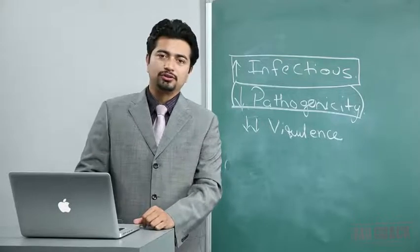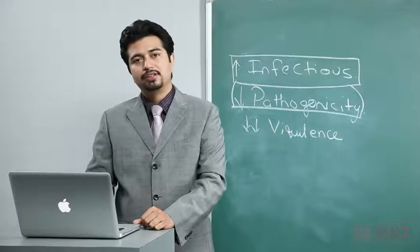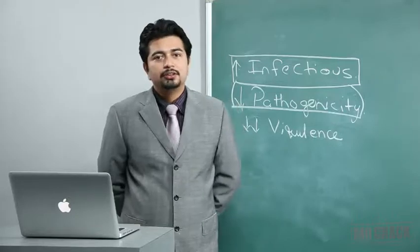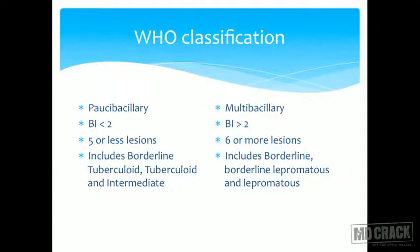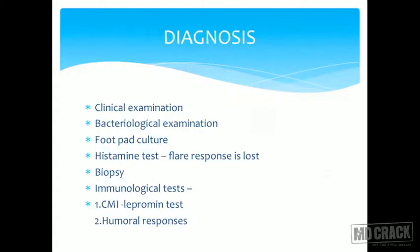Tuberculoid is the best type of leprosy and lepromatous is the worst. The WHO classifies leprosy as paucibacillary and multibacillary. In paucibacillary: bacterial index less than 2 and 5 or fewer lesions. In multibacillary: the reverse is true. Diagnosis involves clinical examination, bacteriological examination, footpad culture, histamine test, biopsy, and immunological tests including the lepromin test.